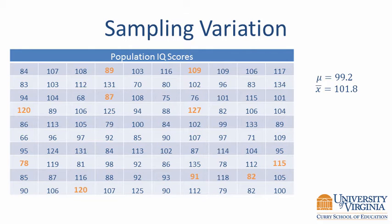More specifically, we can compute the standard deviation of these three values and obtain an estimate of the sampling variation. These values have a standard deviation of 5.7. If the standard deviation of the sampling distribution is large, we would expect the sample means to be notably different from one sample to another. On the other hand, if the standard deviation of the sampling distribution is small, we would expect the sample means to be very similar. The standard deviation of the sampling distribution has a special name — it is called the standard error, and it quantifies the variability in a sample statistic. That is, it tells us how precisely or imprecisely we estimated the population parameter.